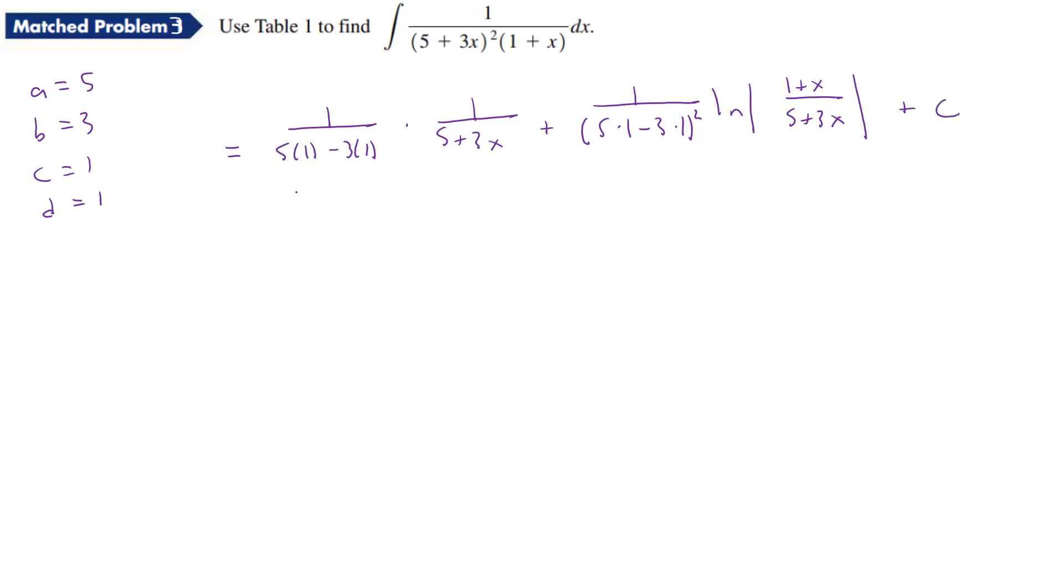Now let's simplify this. So that's going to be 1 over 5 minus 3, so that's going to be 1 over 2, and then we have times, and that's going to be 1 over 5 plus 3X, and then plus.